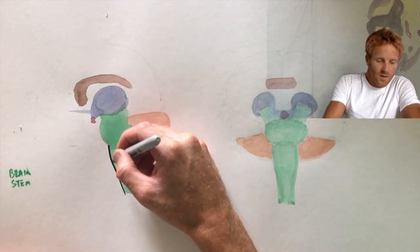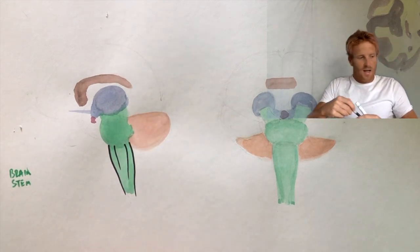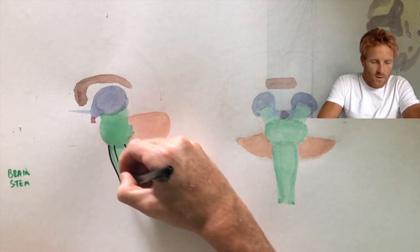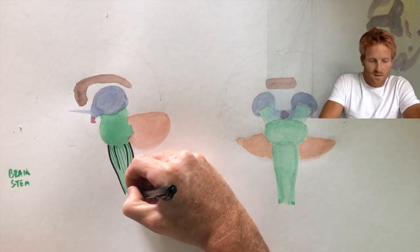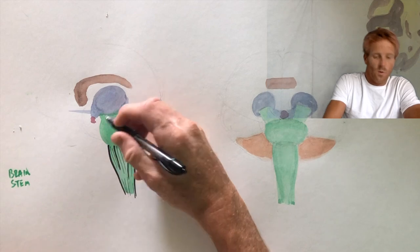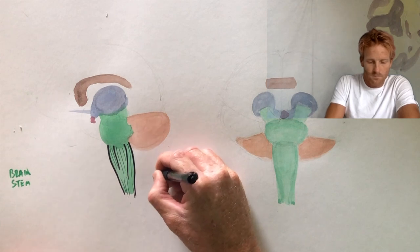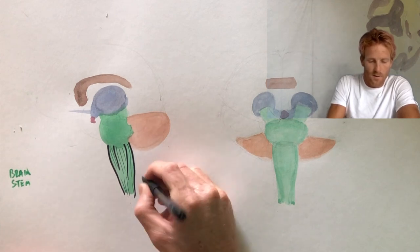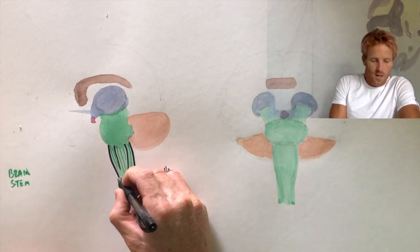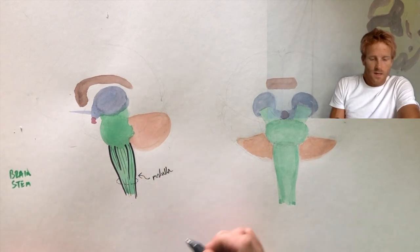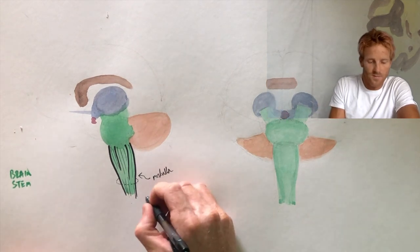The medulla is an interesting part of the brain. It has a couple of different folds in it, and the fibers in the medulla are really running vertically, making up this kind of wrinkly, folded-looking structure. The foramen magnum would be right about here, and below that, where the medulla passes through, it becomes the spinal cord.